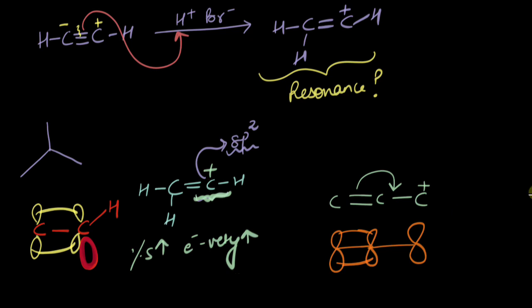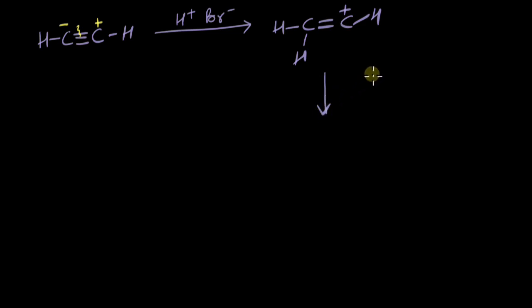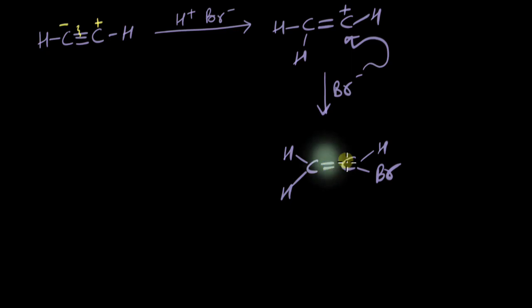So what would happen next? Well, in the next step Br- simply attacks this carbocation and we get the product. If we tend to take one equivalent of HBr we might be able to stop the reaction here, but usually since there is still pi electron density it can attack another molecule of HBr.